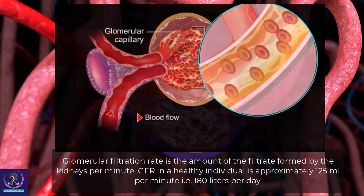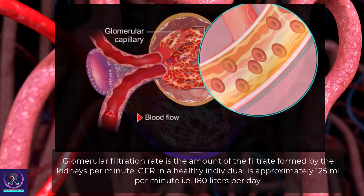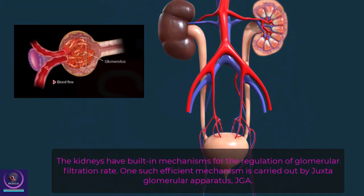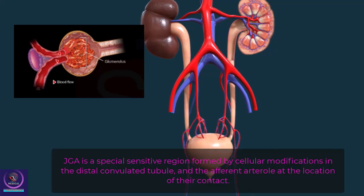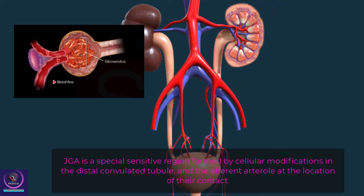Glomerular filtration rate (GFR) is the amount of filtrate formed by the kidneys per minute. In a healthy individual, GFR is approximately 125 milliliters per minute, or 180 liters per day. The kidneys have built-in mechanisms for regulating GFR. One such efficient mechanism is carried out by the juxtaglomerular apparatus (JGA), a special sensitive region formed by cellular modifications in the distal convoluted tubule and the afferent arteriole at their point of contact.